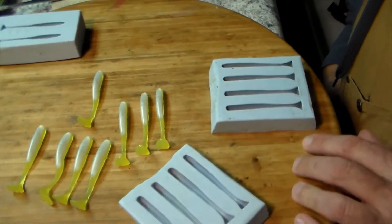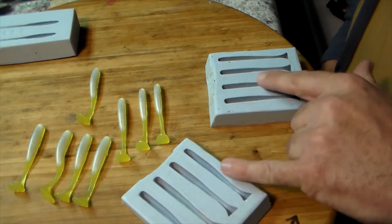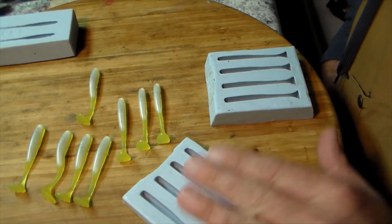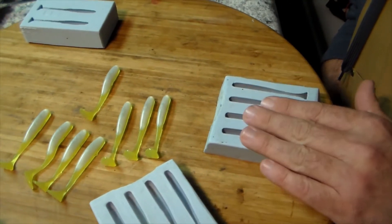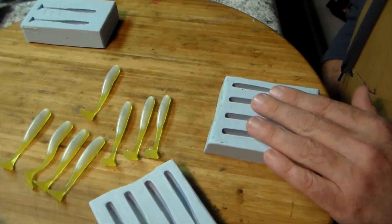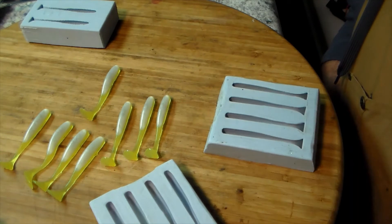So what I'll do on the next round instead of pouring all eight bellies first and then the backs, I'm gonna do four, pour them, start the other four, finish that pour, get a little bit better lamination.